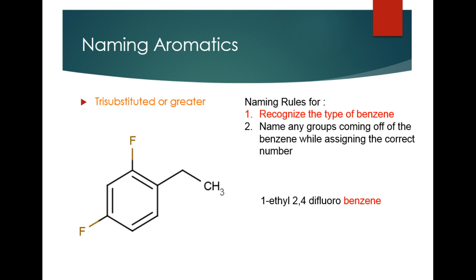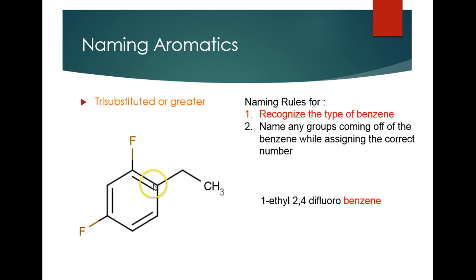The last example is when you're naming benzenes that are trisubstituted or greater — three or more attached groups. You don't use the ortho, meta, or para designations; you go back to normal numbers. The general rule is you want to give your attached groups the lowest set of numbers you possibly can. If we call the ethyl group carbon one, you choose whether to number clockwise or counterclockwise. Numbering counterclockwise gives us 1-ethyl-2,4-difluorobenzene, which is the lowest set of numbers possible.